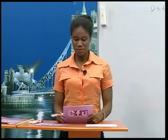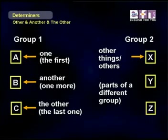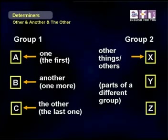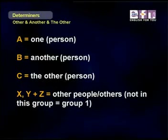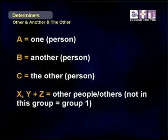We've been talking about people, objects, or things in a group. Now we're going to look at things in other groups. Let's look again at the chart of groups 1 and 2. Before, we talked about things in group 1. When we want to talk about different groups — not group 1 but group 2 — we use 'other' and a plural noun, or just 'others.' But we don't use a noun with plural determiners. So: A is one person, B is another person, and C is the other person. X, Y, and Z are other people — or others — not in this group, in a different group.